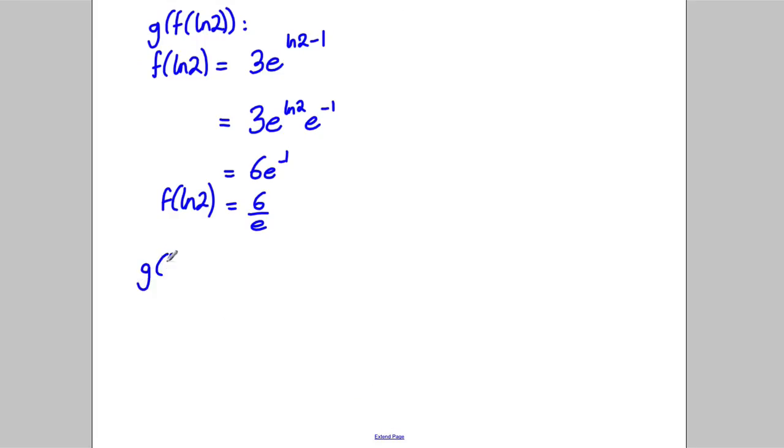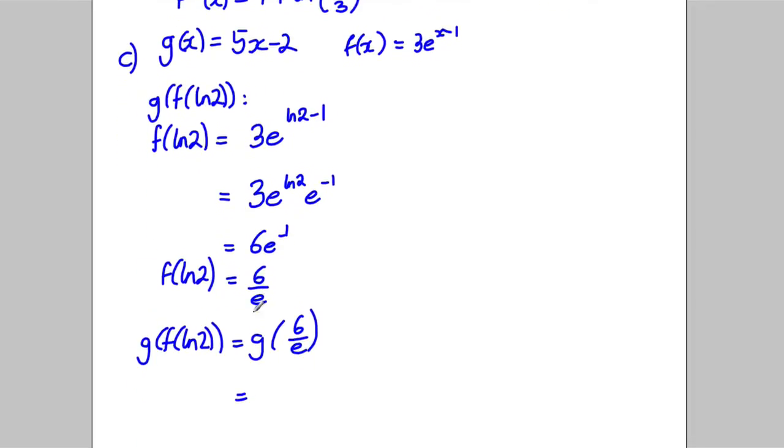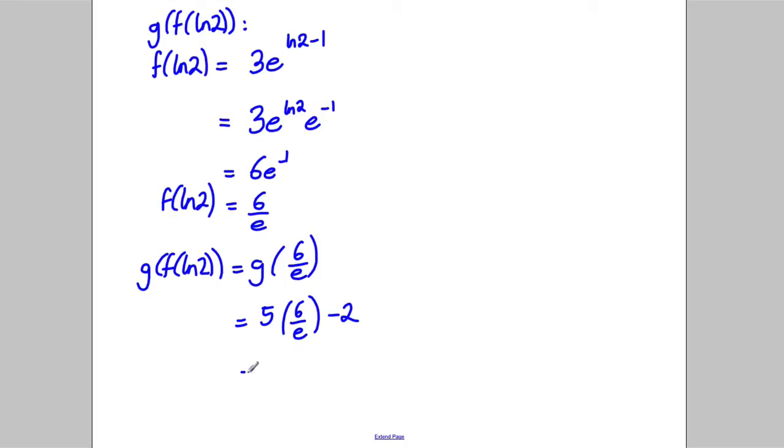So therefore, what's g(f(ln2))? Well, it's going to be g(6/e). Putting that in. So let's put that into this here. So it's going to be 5(6/e) take away 2. And so that's going to be 30/e take away 2.